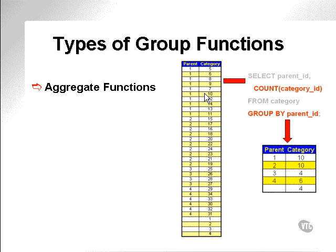What types of group functions are there? There are aggregate functions, what I referred to previously as grouping or summarizing functions. In this case, in the example on the right, I'm actually counting the categories for each parent in the category table, and then I'm grouping by the parent ID.